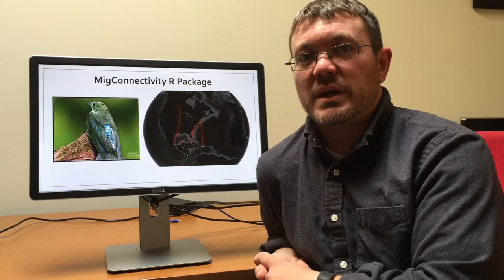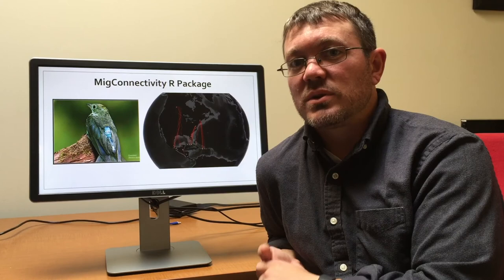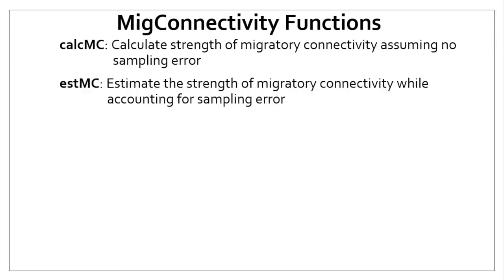What I'm going to show you is what data you need to calculate migratory connectivity using our R package, as well as a brief example of how to do that. There are two main functions within the MigConnectivity package. First is CalcMC, which calculates the strength of migratory connectivity when there is no sampling error — for example, satellite-tracked individuals. If you have sampling error, like location uncertainty associated with light-level geolocators, you would use the STMC function. If you have the time and the data, it's best to use the STMC function.